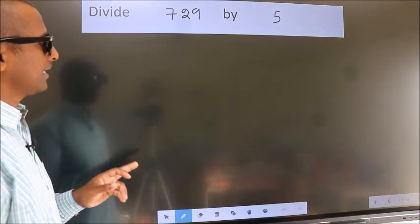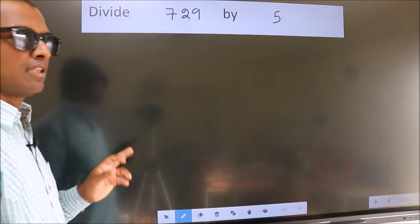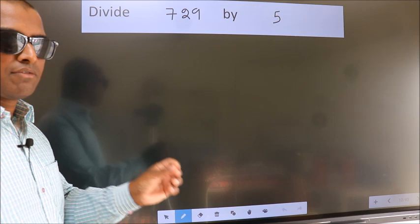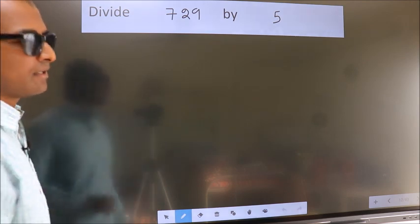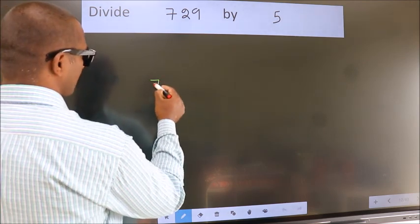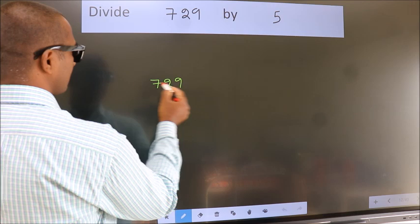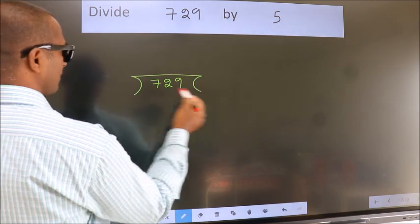Divide 729 by 5. To do this division, we should frame it in this way. 729 here, 5 here.